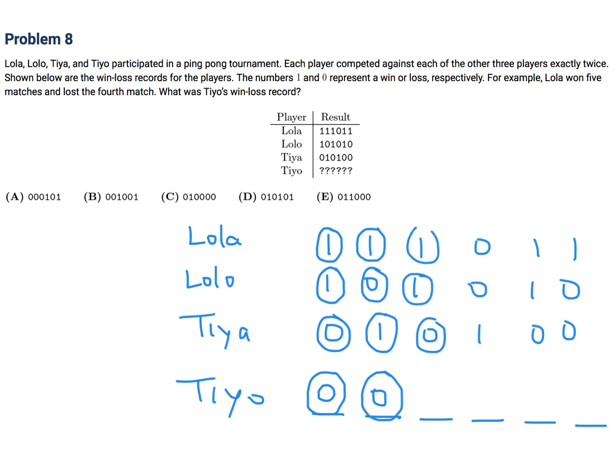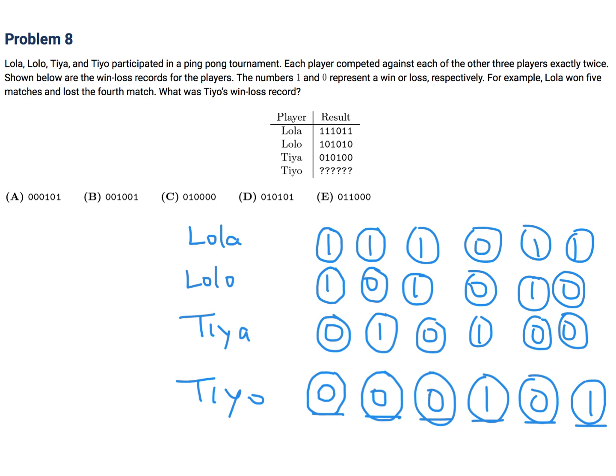This will represent one game, and then this represents one game. I'll put a zero there. These two represent one game, and this and this represent one game, but this time this will be a one. And then this represents one game. That represents one game. That'll be a zero. This represents one game, and this and this represent one game. Well, that would be a one. So zero, zero, zero, one, zero, one. And that is choice A.